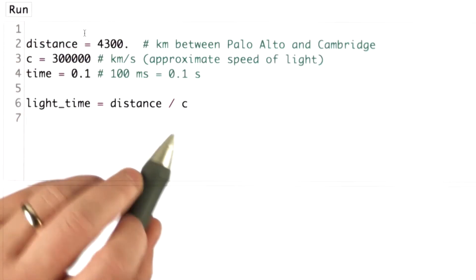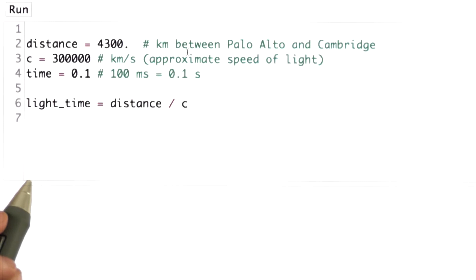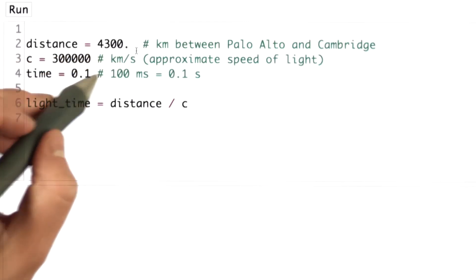So we have the distance, which is 4300. That's the number of kilometers between Palo Alto and Cambridge. We have the speed of light, which is approximately 300,000 kilometers per second. And we have the time it took, which since we're using seconds as our unit for the speed of light, we should put in seconds.